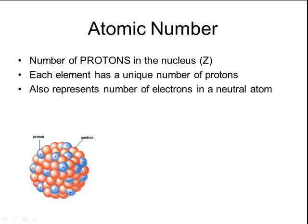Also remember that because atoms are neutral, the number of protons and the number of electrons have to be equal to each other in a neutral atom. So if the number of protons in carbon is six, the number of electrons in a neutral atom of carbon will also be six.